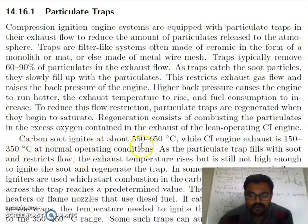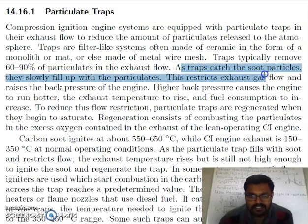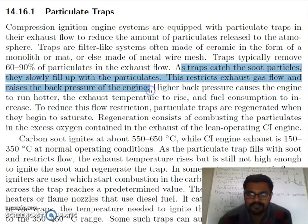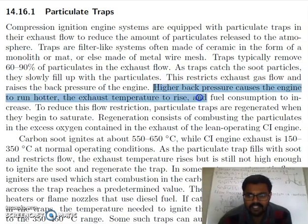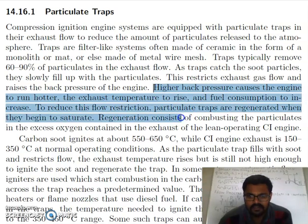As traps catch soot particles, they slowly fill up with particles. This restricts exhaust flow and increases the back pressure of the engine. Although we have trapped the particles to prevent them from entering the environment, they will cause a problem by increasing the engine back pressure. Higher back pressure causes the engine to run hotter, exhaust temperature rises, and fuel consumption increases.